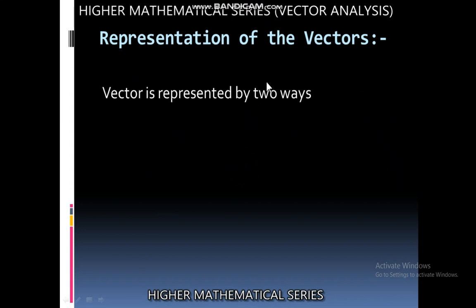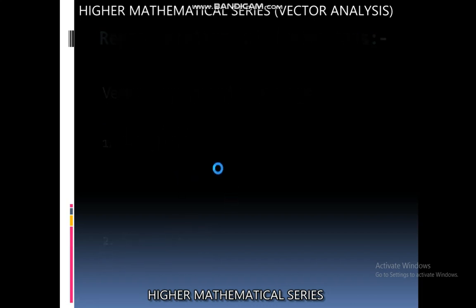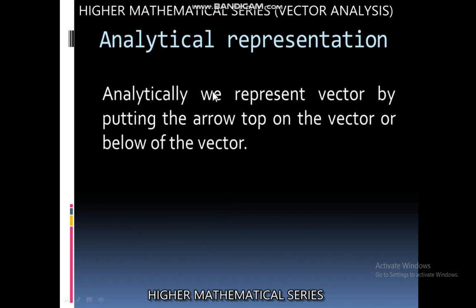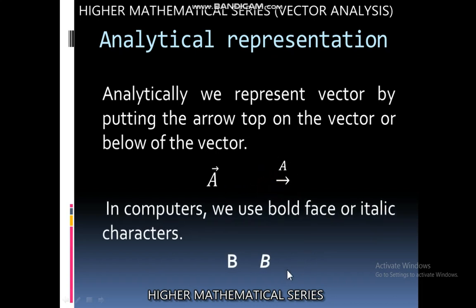Here is the representation of vector. How can we represent vectors? There are two ways of representation: first is analytical representation, second is geometrical representation. Analytical representation is done in two ways in handwritten form. In handwritten form we represent a vector by putting an arrow on or below the letter. In computers we represent the vector analytically by boldface or italic form.